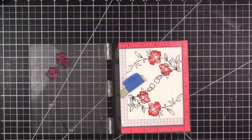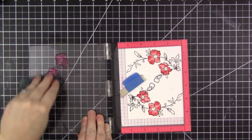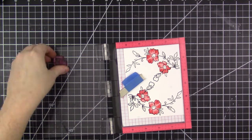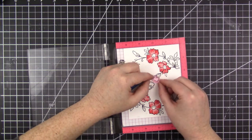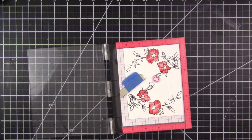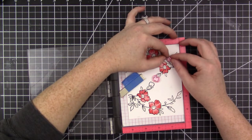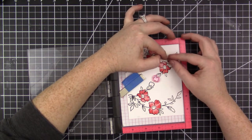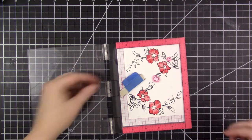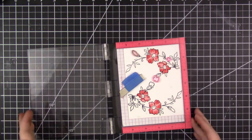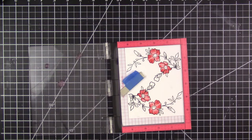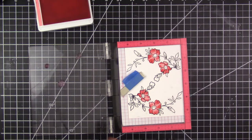Now it is entirely possible to stamp these images without a stamp positioner. A clear block would also work too because you can see through it to line up the layers. However, even if the layers aren't lined up perfectly on top of one another, that's totally okay.